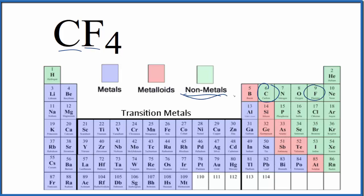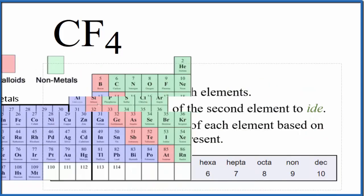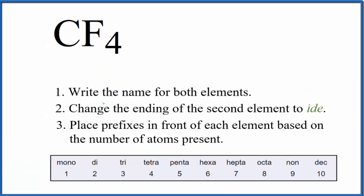So two nonmetals means we have a covalent, also called a molecular compound. We can use these rules here to write the name for CF4. First, we write the name for both elements: carbon and fluorine.